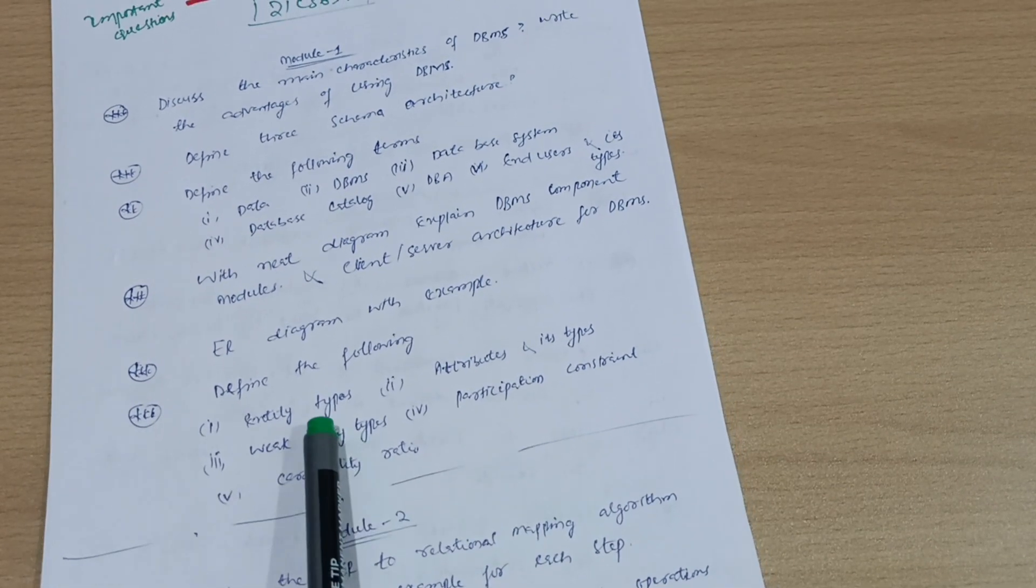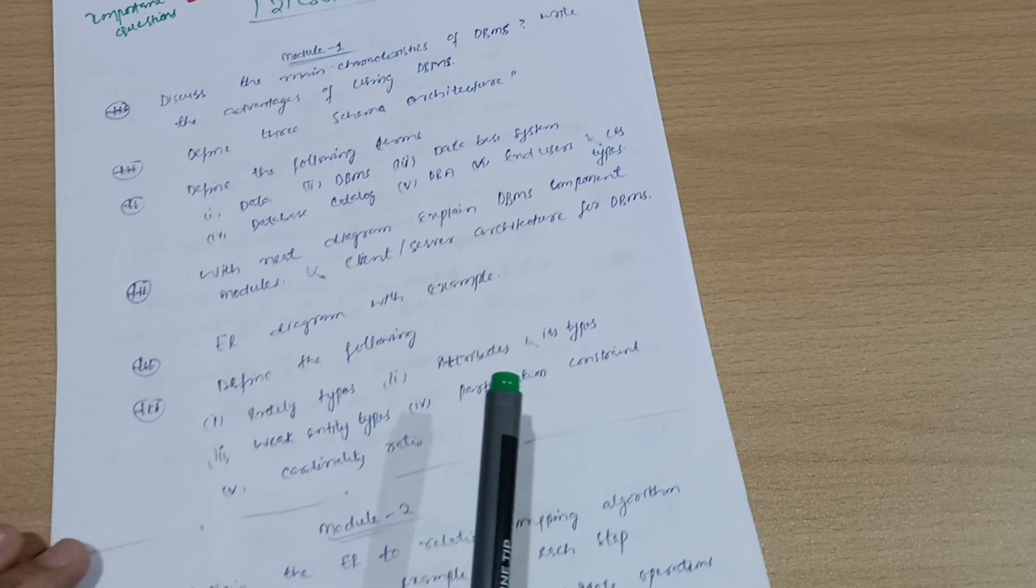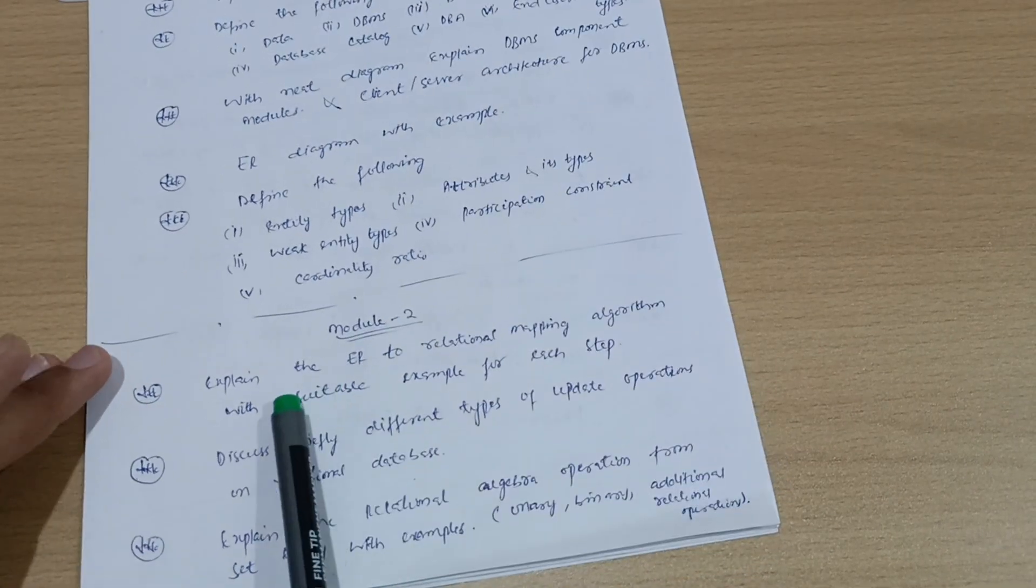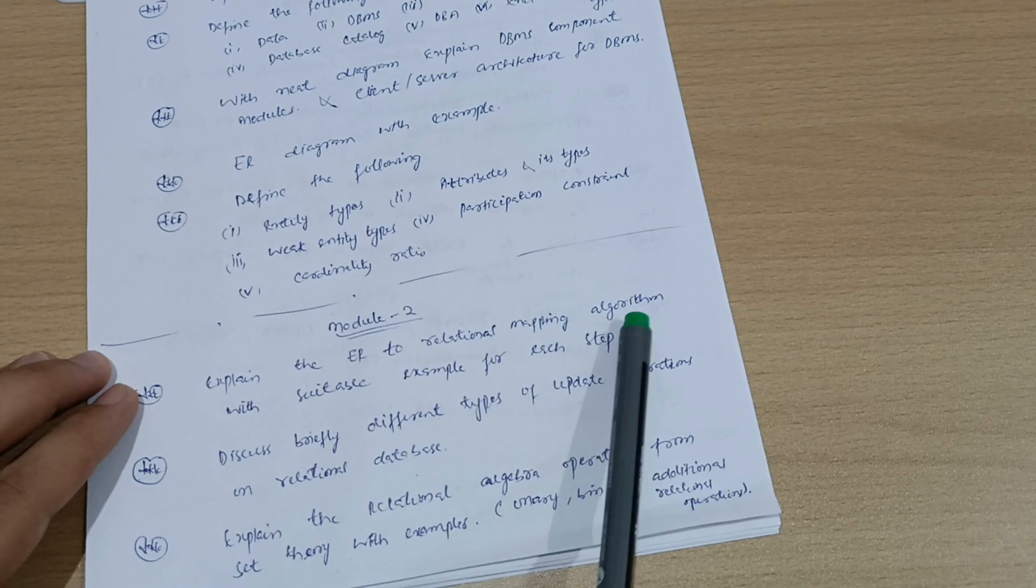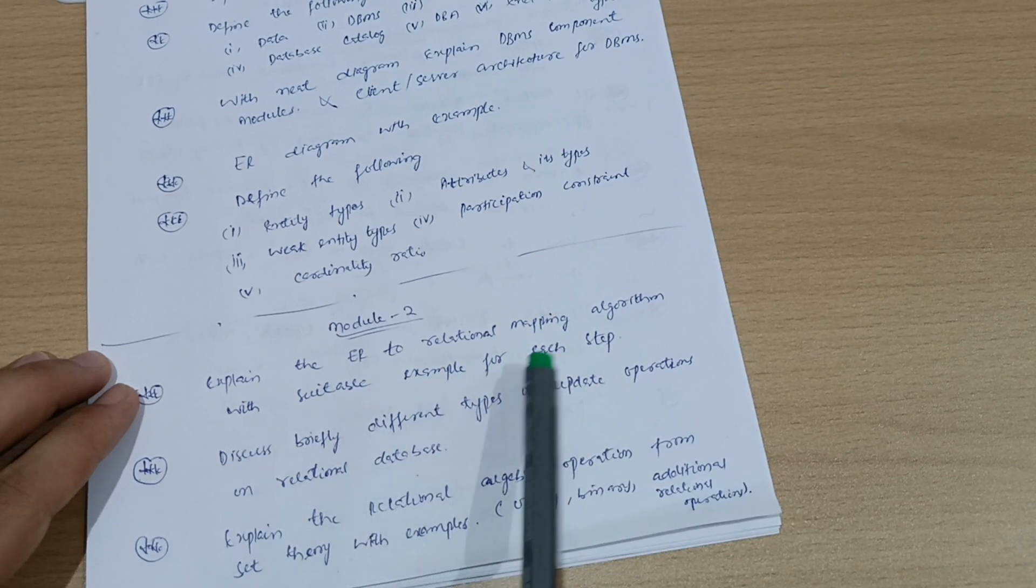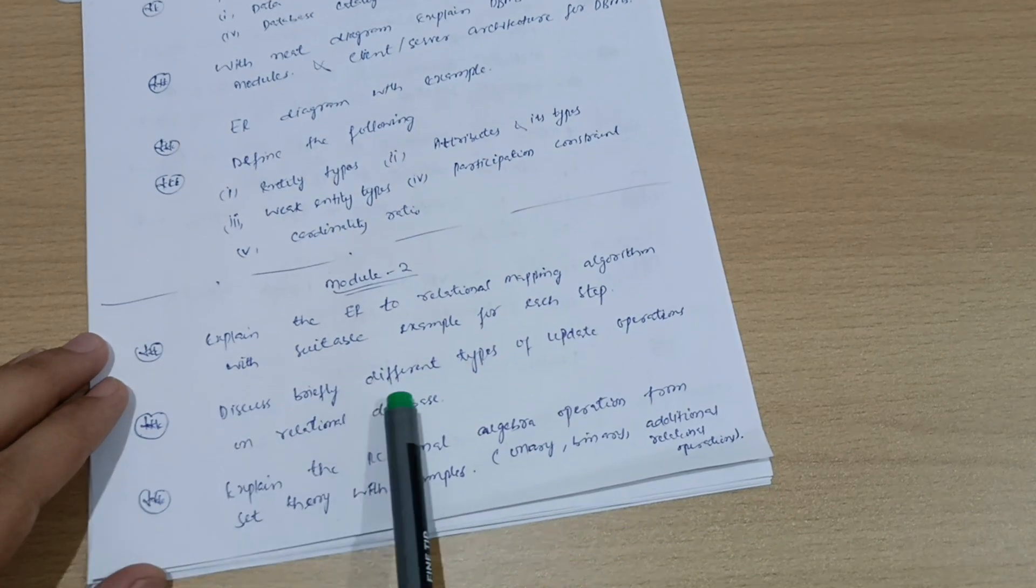These are super important questions from Module 1. In Module 2, we have: Explain the ER to relational mapping algorithm with suitable examples for each step. Discuss briefly different types of update operations on relational databases.